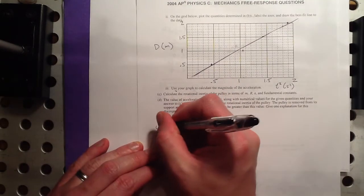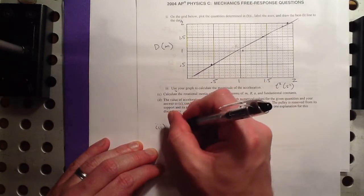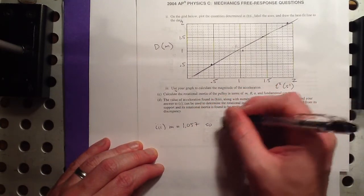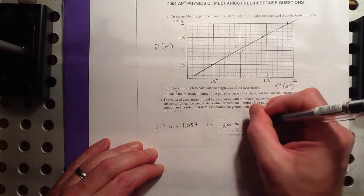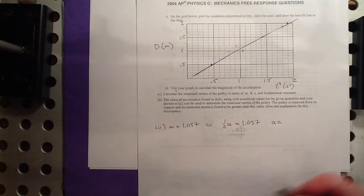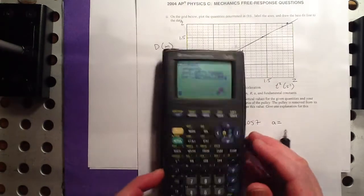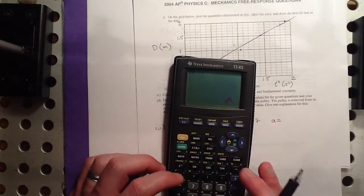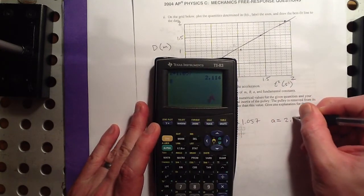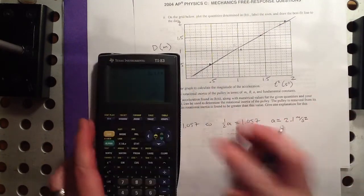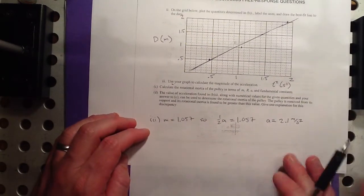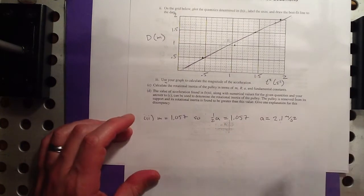So, this is part 3 here. Slope equals 1.057, so 1.5 A, remember that's what the slope was in our equation, is equal to 1.057. So, A is 2 times that. So, 2 times 1.057 is about 2.1 meters per second squared. You could keep another decimal place there, don't keep too many, sometimes they actually take off a point for keeping too many significant figures. So, I think that looks pretty good.